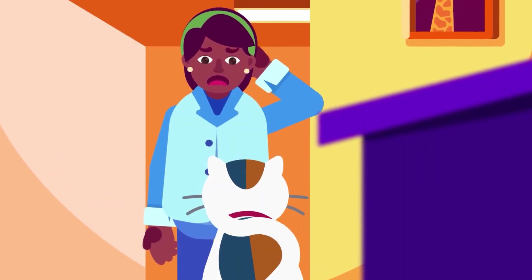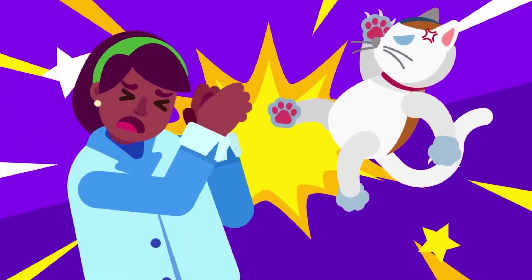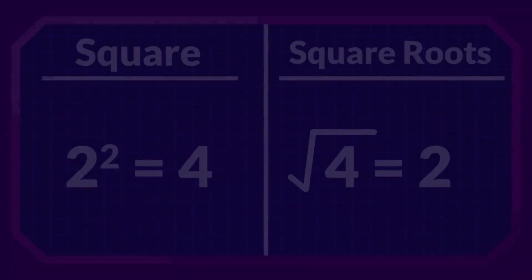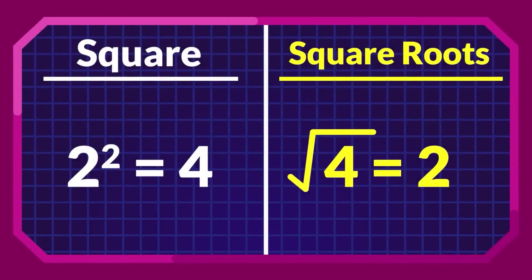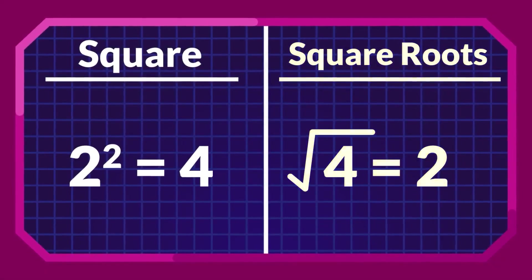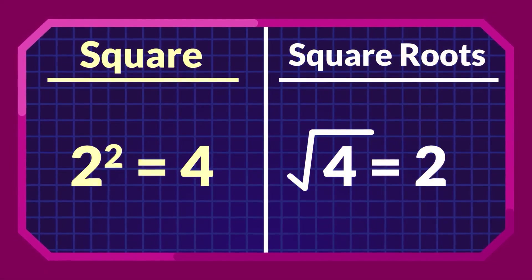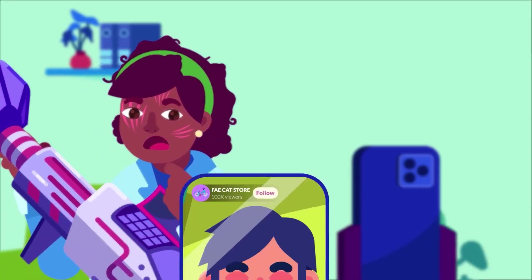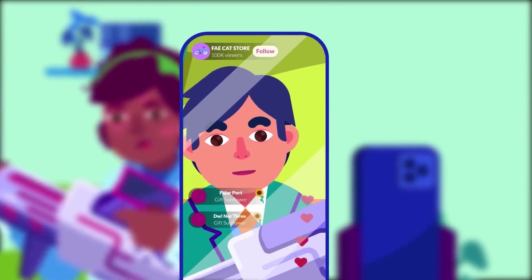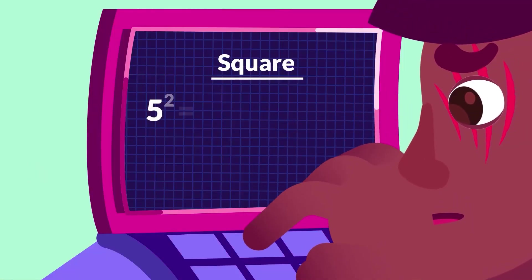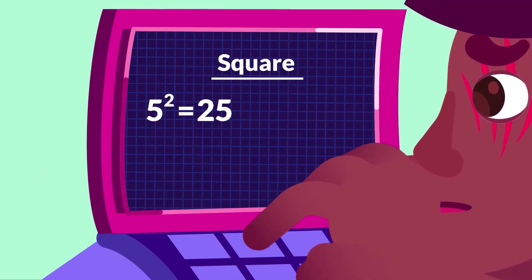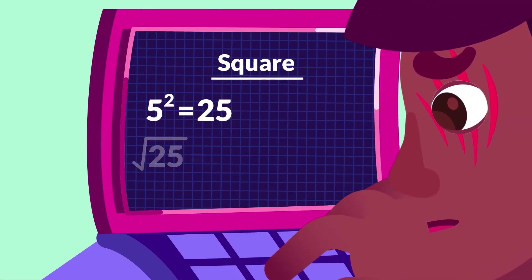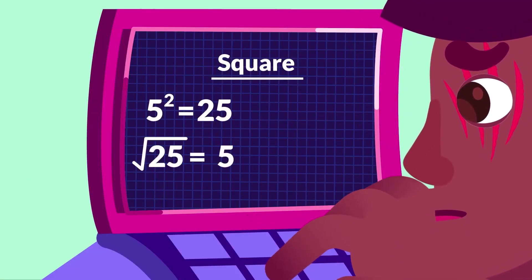In our previous video, we learned about squares and square roots. We've already known that the square root's operation is the inverse of the squaring operation. For example, when you square 5, you get 25, and its square root is 5.